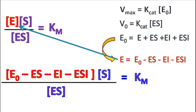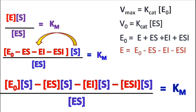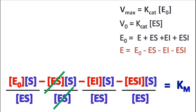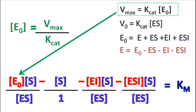The E in the above equation can be substituted as E₀ minus ES minus EI minus ESI. Multiplying by S on the left-hand side, we get E₀ times S minus ES times S minus ESI times S upon ES is equal to Km. Rearranging, we get E₀ times S upon ES minus ESI times S upon ES is equal to Km.